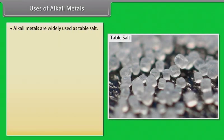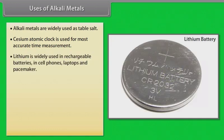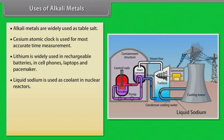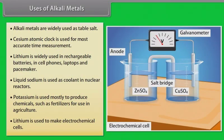Uses of alkali metals. Alkali metals are widely used as stable salts. The cesium atomic clock is used for most accurate time measurement. Lithium is widely used in rechargeable batteries in cell phones, laptops and pacemakers. Liquid sodium is used as a coolant in nuclear reactors. Potassium is used mostly to produce chemicals such as fertilizers for use in agriculture. Lithium is also used to make electrochemical cells.